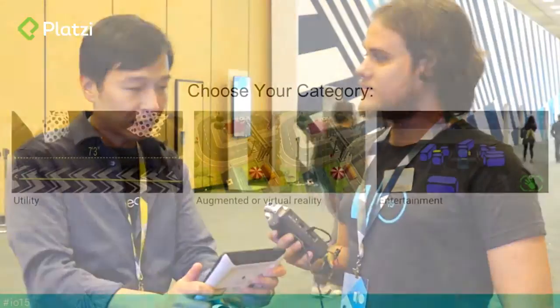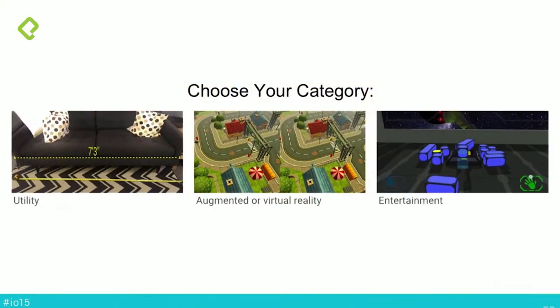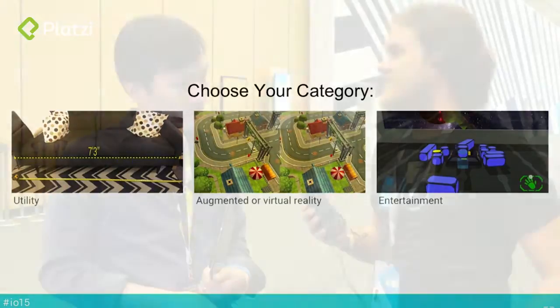We can use it for measurement applications — measure objects within the space. So say I want to see if my sofa will fit in my new apartment. I can point my Project Tango device at the sofa, get the measurements, and then point it at the open space and I can get an idea if it will fit or not.